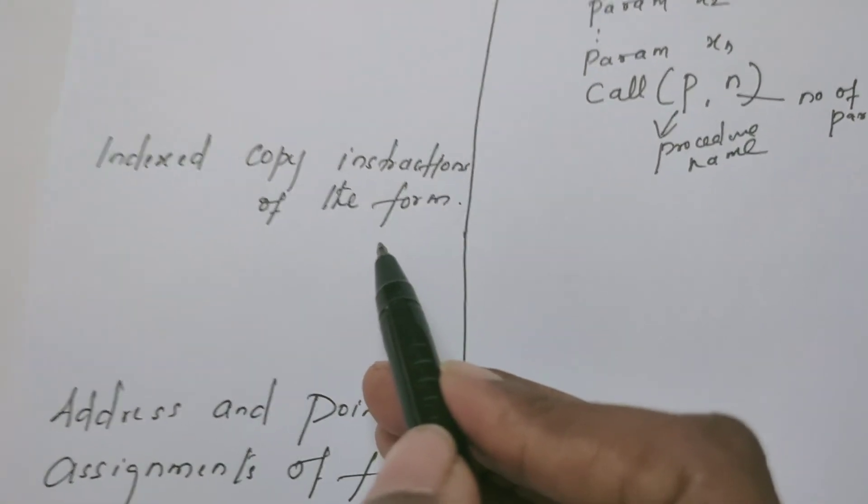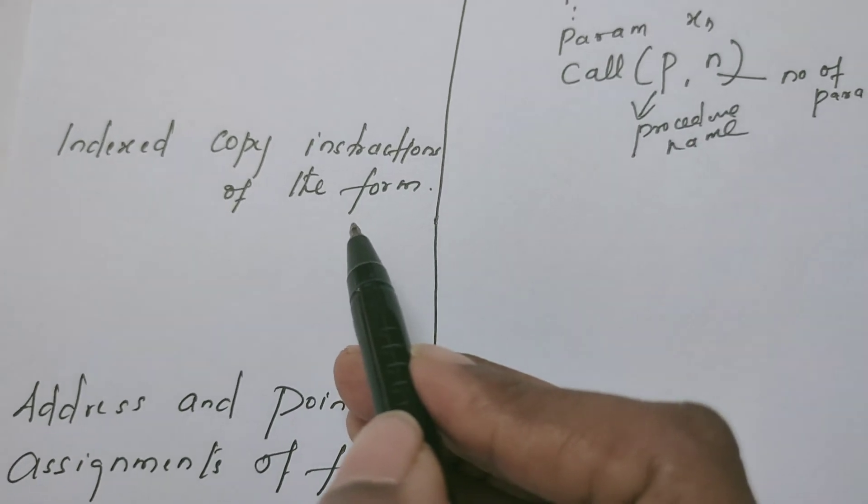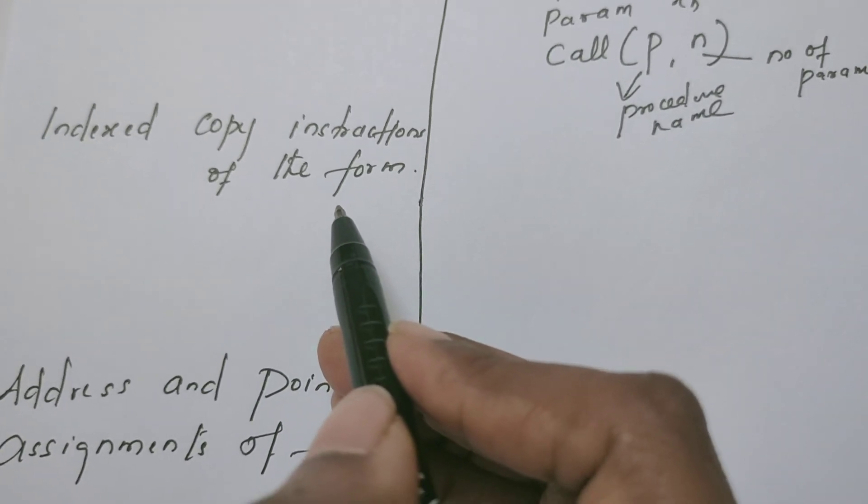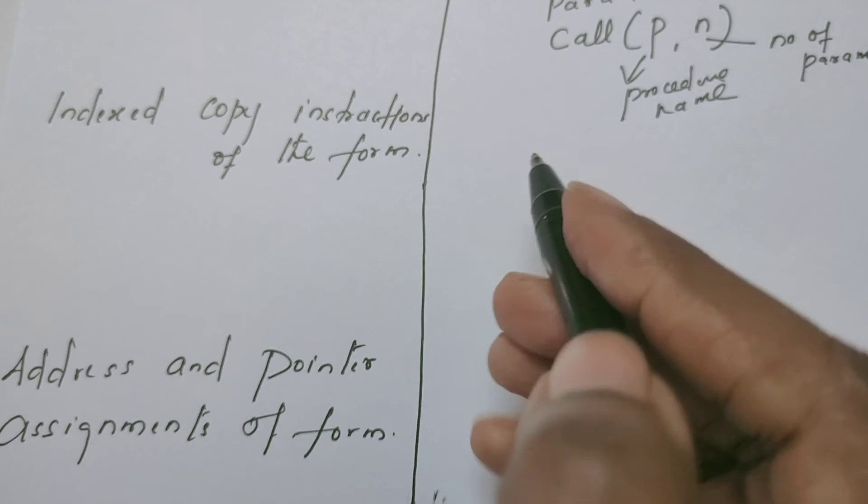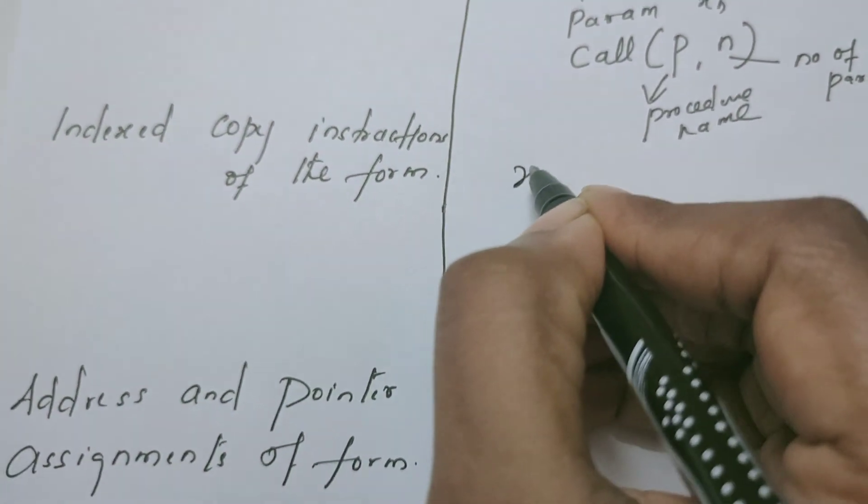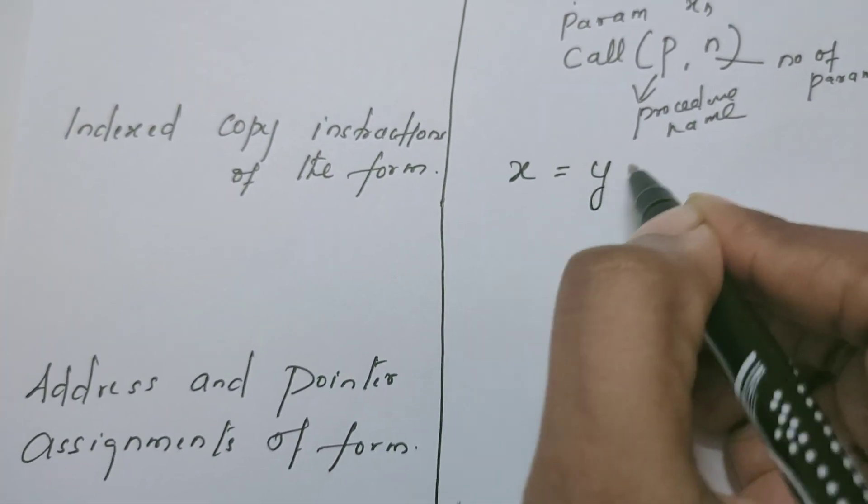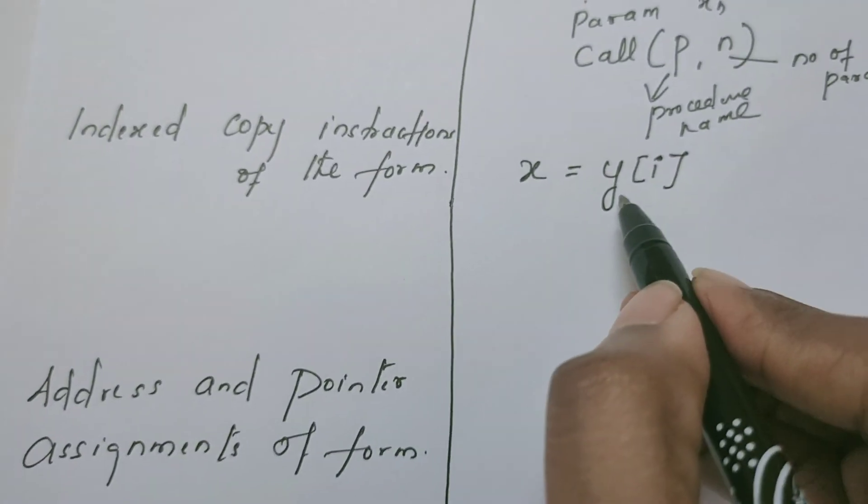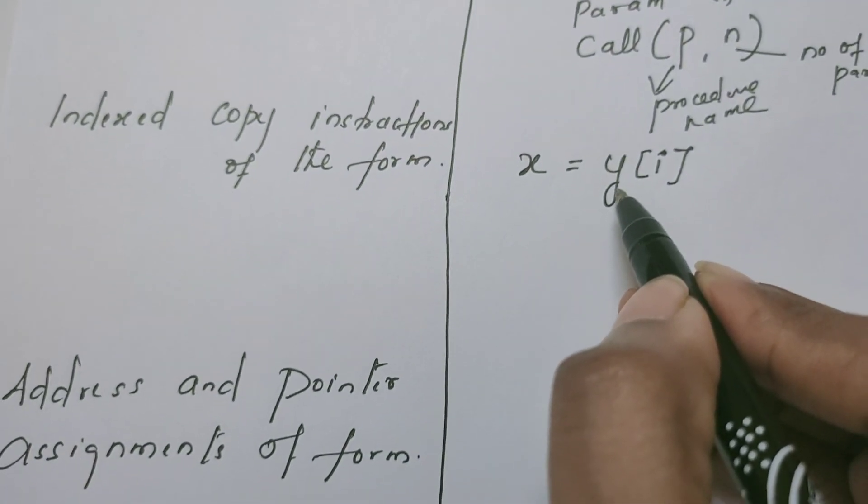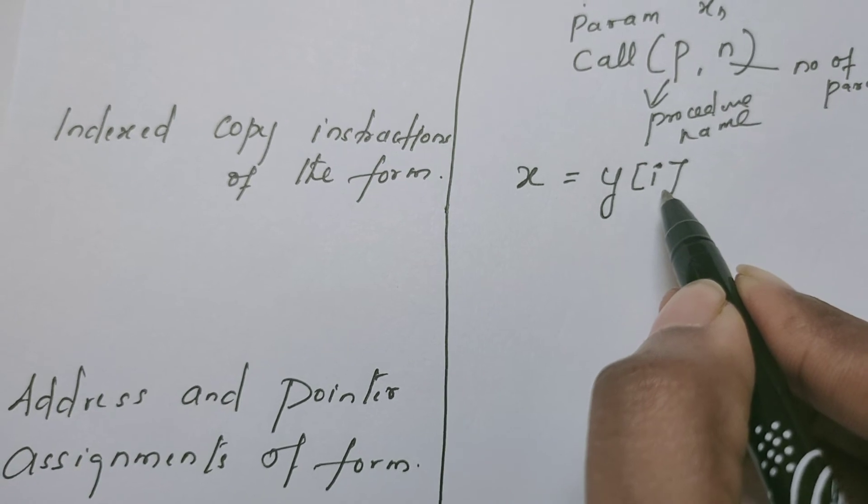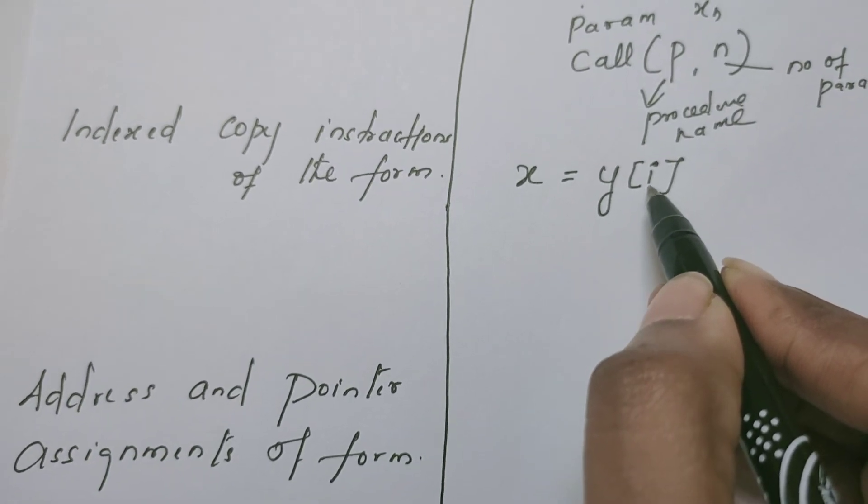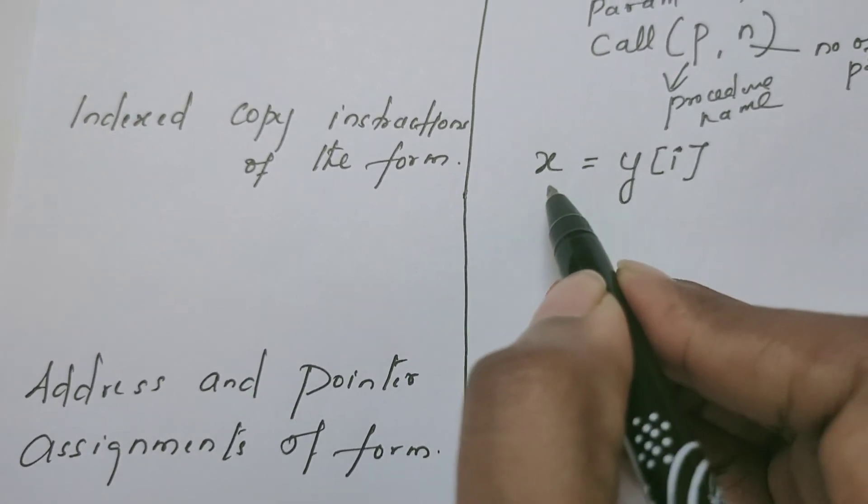Now let us see: if indexed copy instructions are available in high-level language, how do we write it in three address code? It is very simple: x is equal to yi. What does it mean? You can assume y as an array. At the location or at the index i, some value is available. That is being copied to x.